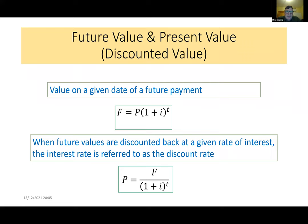We start with the definitions of future value and present value. The future value of a payment is given by F equals P times (1 plus i) to the t, where F is the future value, P is the present value, i is the rate of interest as a decimal, and t is the number of compounding periods. The present value formula is the rearrangement: P equals F all over (1 plus i) to the t.